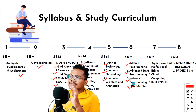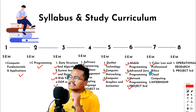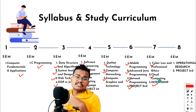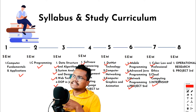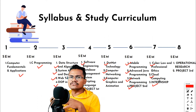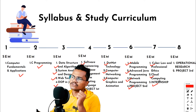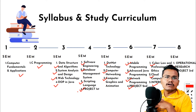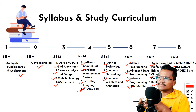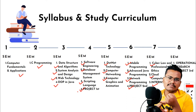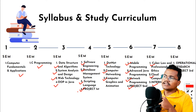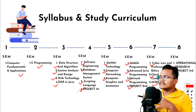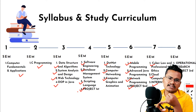In later semesters, subjects include .NET Technology, Networking, Computer Graphics and Animation. The sixth semester covers Mobile Programming, Advanced Java Programming, and Network Programming. The seventh semester includes Cyber Law, Professional Ethics, and Cloud Computing. The eighth semester features intensive project work as the final major project.